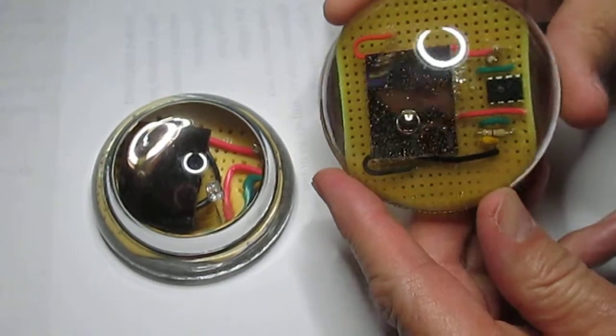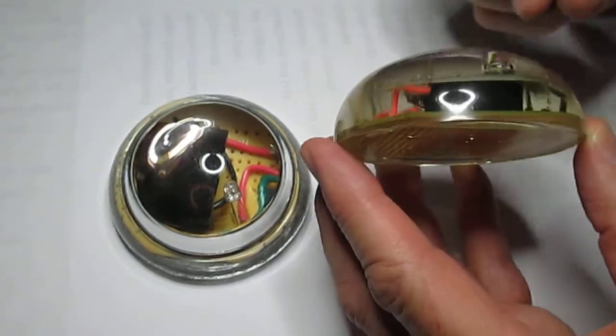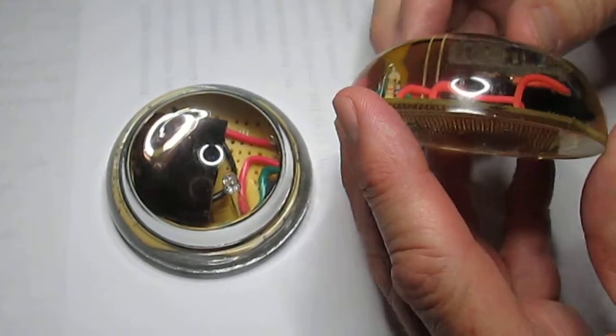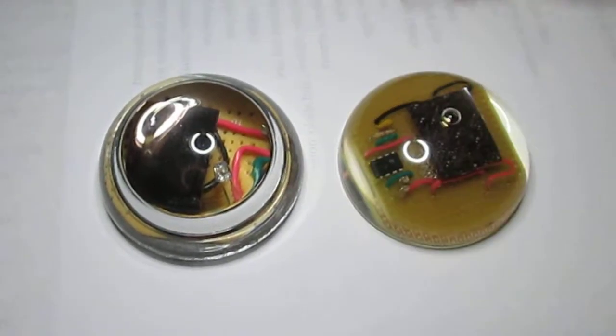See that little solar panel, that square guy there? And underneath the solar cell, I've got a little diode in there to protect the solar cell from getting backfed from the super capacitor. One farad, 5.5 volt super capacitor. Good forever.